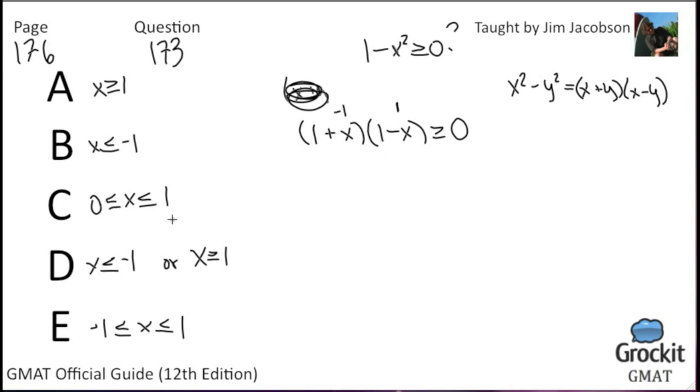So we can cross off choices. This one includes 1, but it doesn't include negative 1. This one includes negative 1, but not 1. This one includes 1, but not negative 1. Here we are basically left with two answer choices.